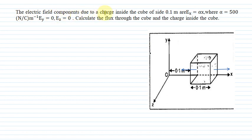The electric field component due to a charge inside the cube of side 0.1 meter is Ex equal to alpha x where alpha is 500 Newton per Coulomb meter inverse. Ey equal to 0 and Ez is also equal to 0. Calculate the flux through the cube and charge inside the cube.